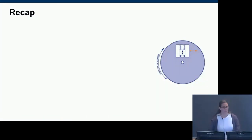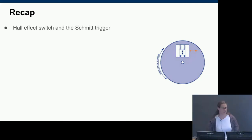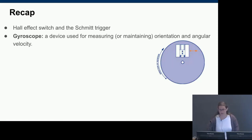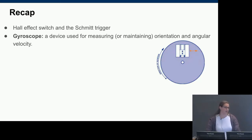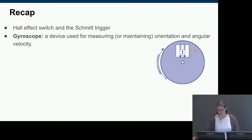Last time we talked about the Hall effect and the Schmidt trigger and how they worked. The Hall effect switch uses the Schmidt trigger for debouncing. Hall effect switches are the most common way you'll see Hall effect devices, and you'll see them in applications like keyboards and anti-lock brake systems.